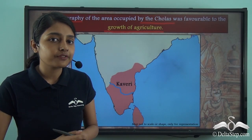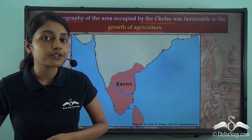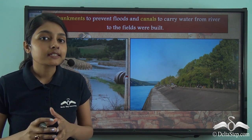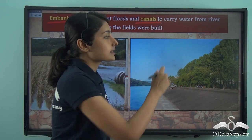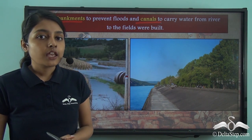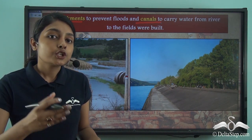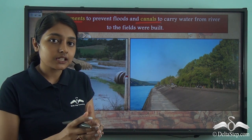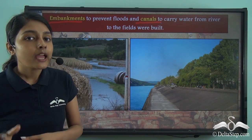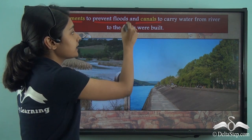The Cholas devised an idea to stop this problem: they constructed embankments and canals. An embankment is a kind of huge wall or barrier. Why are embankments built? Embankments are built to stop the flooding of agricultural lands — if an agricultural land is surrounded by a strong embankment, excess water will not be able to enter and destroy all the crops. So embankments were constructed during the Chola period to prevent flooding of agricultural lands.